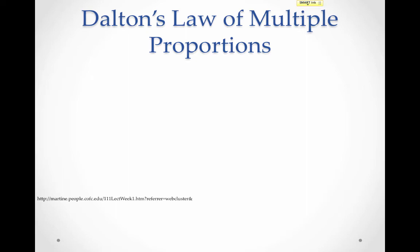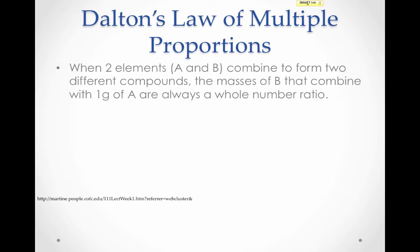This led John Dalton to develop his law of multiple proportions. So Dalton noticed that when two elements, let's call them A and B, combine to form two different compounds, the masses of B that combine with one gram of A are always a whole number ratio. That can sound a little confusing.